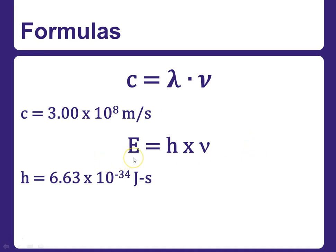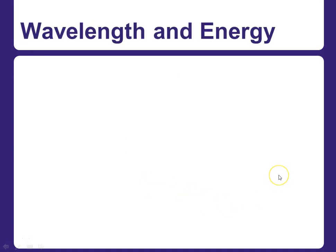and that E, the energy, is equal to h, Planck's constant, times nu, which is the frequency. And Planck's constant is 6.63 times 10 to the minus 34 joules times seconds. So now we're ready to calculate